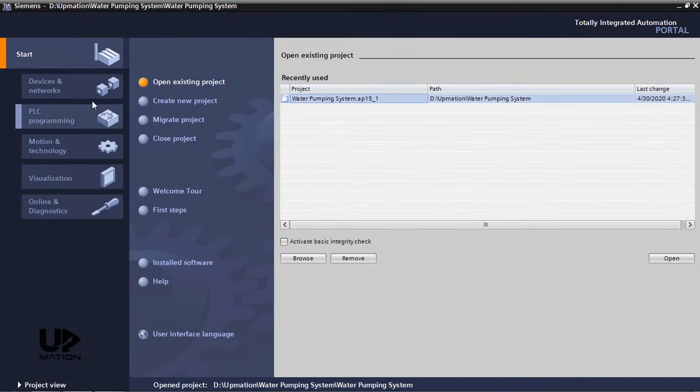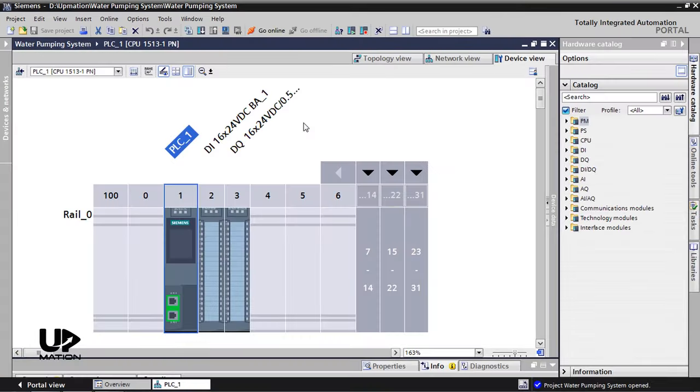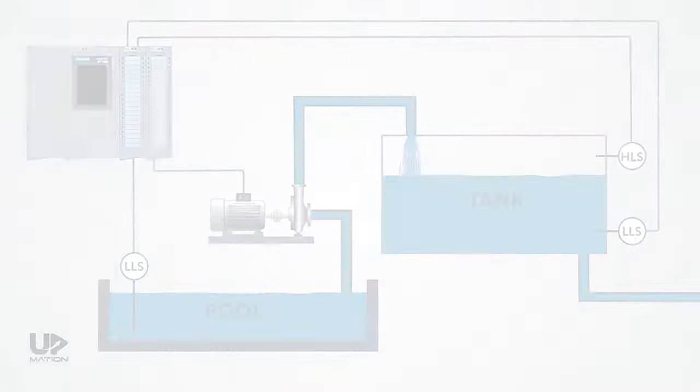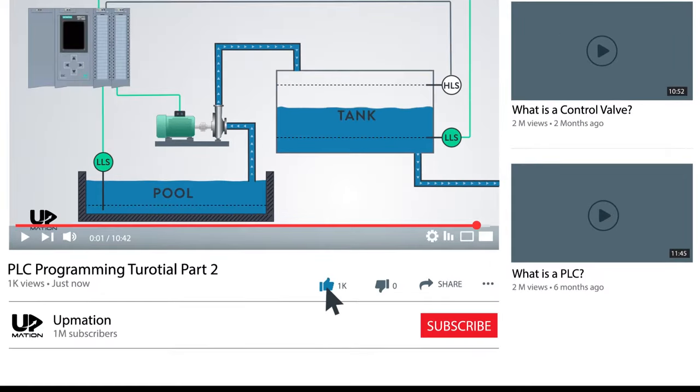In the previous video of this series we configured our PLC hardware in TIA Portal version 15.1. In this video we are going to write a PLC program in ladder logic for this simple water pumping system, and in the next video we will test it using the PLC simulator. If you're looking to grow your PLC programming skills, consider subscribing and click the notification bell to know instantly when we upload a video just like this one.